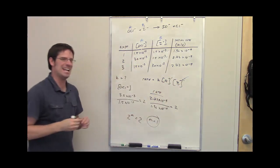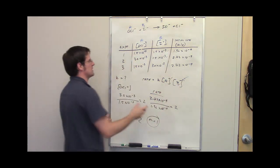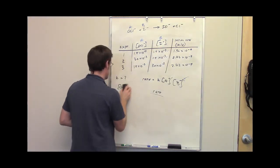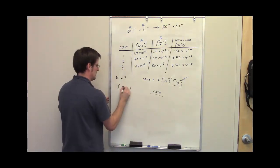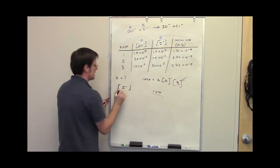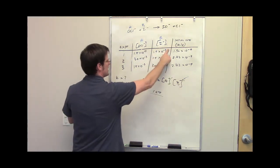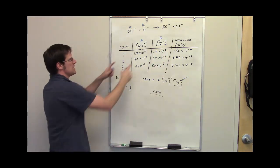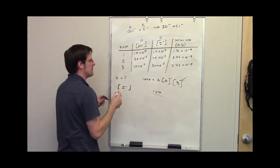How do I determine what n is? I do the exact same process, except I do it for component B, the iodide. So I'm going to erase this and take a look at the iodide. I'm going to focus once again on the experiments where the other component, A, was kept the same.